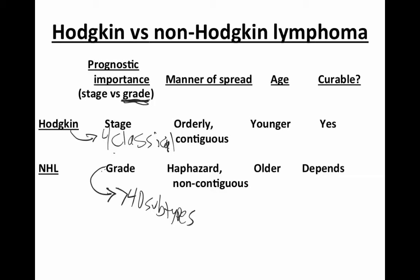Non-Hodgkin lymphoma, on the other hand, is completely haphazard and non-contiguous — it does whatever it wants. I've seen patients with a small node in their high neck, all other scans and tests negative, do a bone marrow biopsy, and boom, it's in the bone marrow. Why that is, not entirely clear.